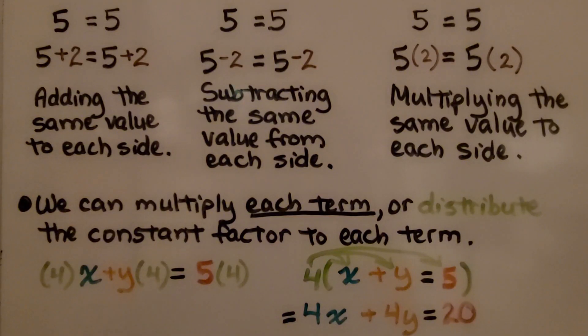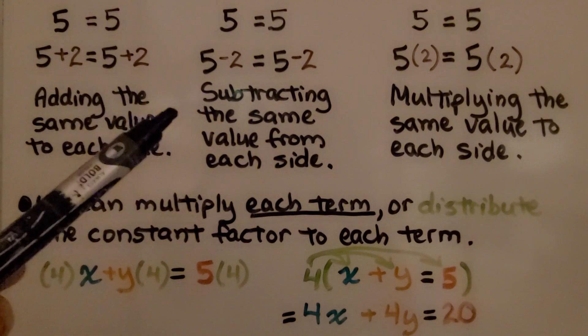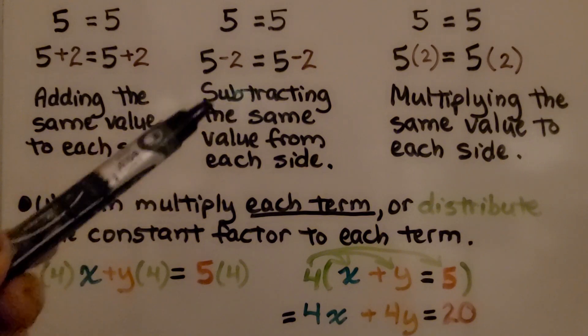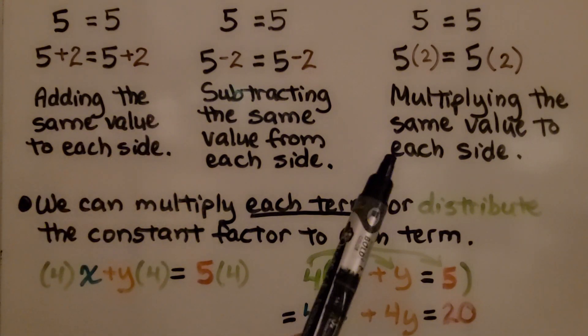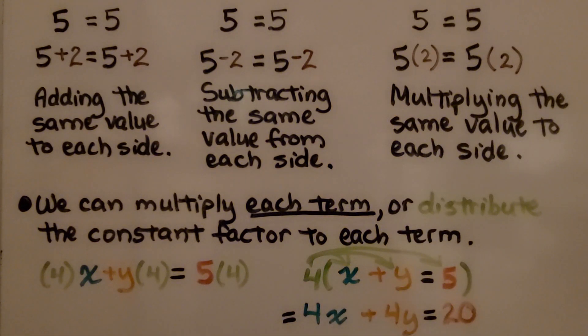Adding the same value to each side of an equation will make the sum equal. Subtracting the same value from each side will make the difference equal. And multiplying the same value to each side will make the products equal. We can multiply each term or distribute the constant factor to each of them. If we have x plus y equals 5, we can distribute 4 to every term of the equation even after the equal sign to get 4x plus 4y equals 20.